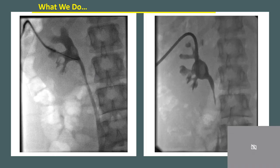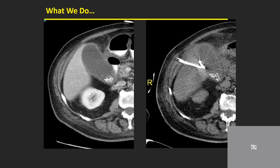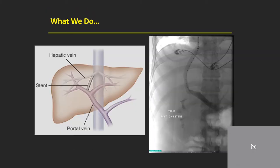We can drain urine. We can drain bile. And we can create shunts between different organs. For example, a transjugular intrahepatic portosystemic shunt — TIPS, if you will.